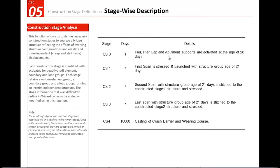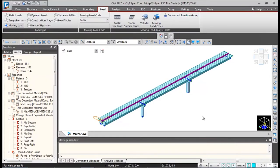The next stage CS1 will be activating the first span; the age of the first span when launched will be 21 days. Then the next stage will be activating the second span, and subsequently the third span. Finally, we'll be applying the crash barrier and bearing course load, with a duration of 10,000 days for the last stage for long-term creep and shrinkage calculation.